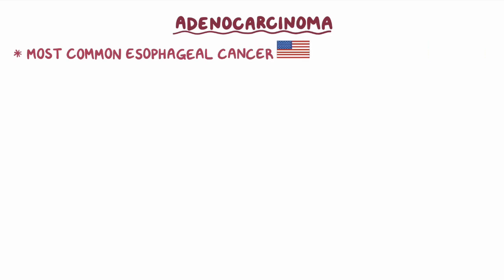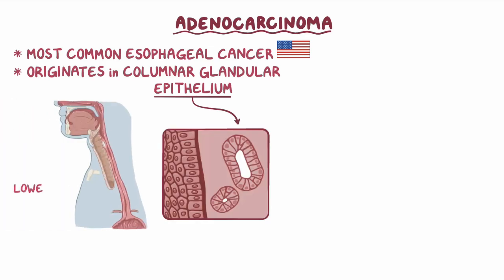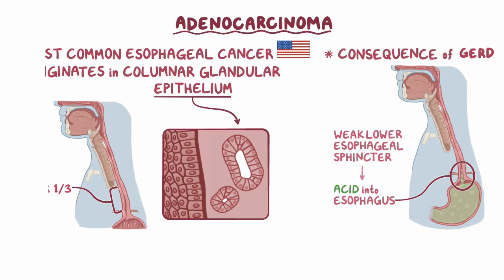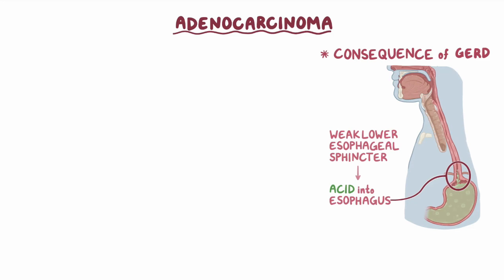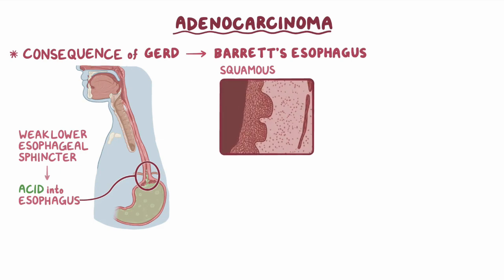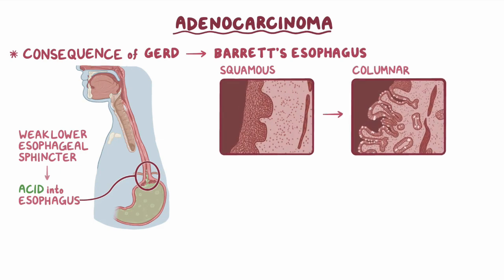Adenocarcinoma is the most common type of esophageal cancer in the United States, and it originates in the columnar glandular epithelium, most often in the lower third of the esophagus. Most frequently, adenocarcinoma develops as a consequence of gastroesophageal reflux disease, or GERD. With GERD, the lower esophageal sphincter is weaker than normal and allows acid from the stomach to go back up into the esophagus after meals. The presence of acid in the esophagus can lead to Barrett's esophagus, which is when the squamous epithelium lining the esophagus is replaced by a columnar epithelium similar to that of the intestines, that's better adapted to withstand the acidity.